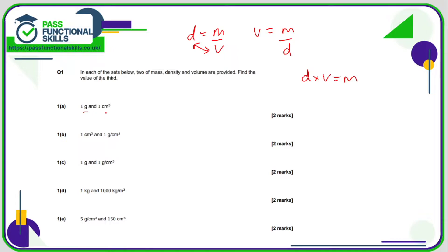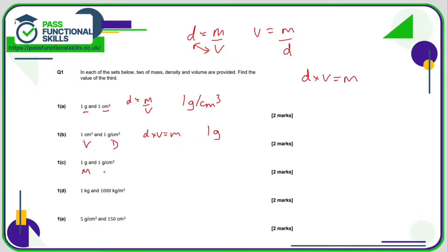Here we've got the mass and the volume, so we want to work out the density. Density is the mass divided by the volume, which is 1 divided by 1, so that is 1 gram per cubic centimetre. Here we have the volume and the density, so the mass is going to be density times the volume: 1 times 1 is 1 gram. Here we've got the mass and the density, so the volume is mass divided by density, which is 1 divided by 1, giving 1 cubic centimetre.